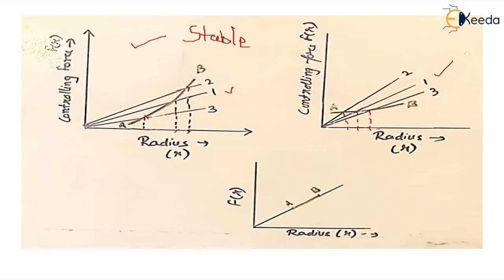That means when speed increases, radius decreases and it increases the flow of fuel supply, which is not wanted, and vice versa. So this is an unstable condition which is not at all desirable in case of governors.